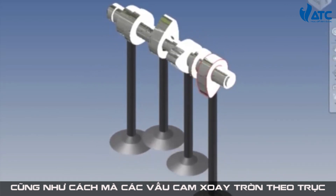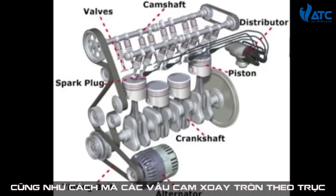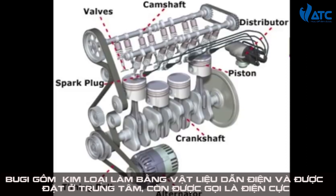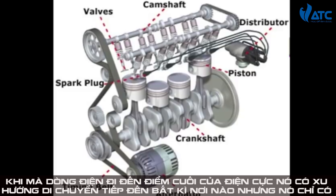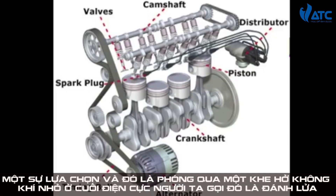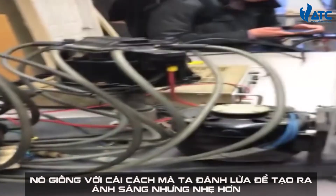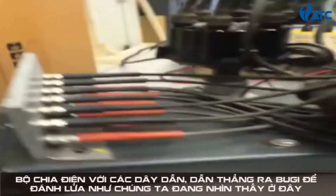Next is the distributor. The distributor takes electricity from the battery of your car and sends it to the spark plugs using wires. The spark plugs are small stick-shaped pieces of metal with a conductive material in the middle called an electrode. When the electricity reaches the end of the electrode, it jumps the little gap at the end — this is called a spark, just like how you use a spark to light a lighter.